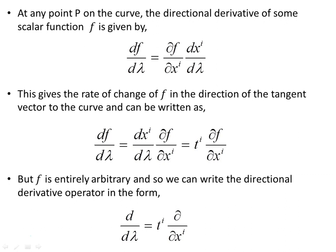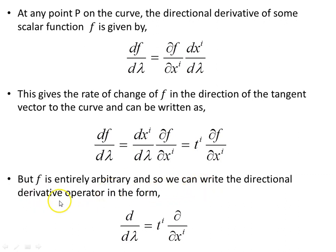Let's pursue this directional derivative idea. At any point p on the curve, the directional derivative of some scalar function f is given by df/dλ = (df/dxᵢ)(dxᵢ/dλ). This part dxᵢ/dλ turns out to be the tangent vector, giving the rate of change of f in the direction of the tangent vector. We can write the directional derivative operator as d/dλ = tⁱ(d/dxᵢ), which acts on some scalar function f and plays a key role in the rest of the video.